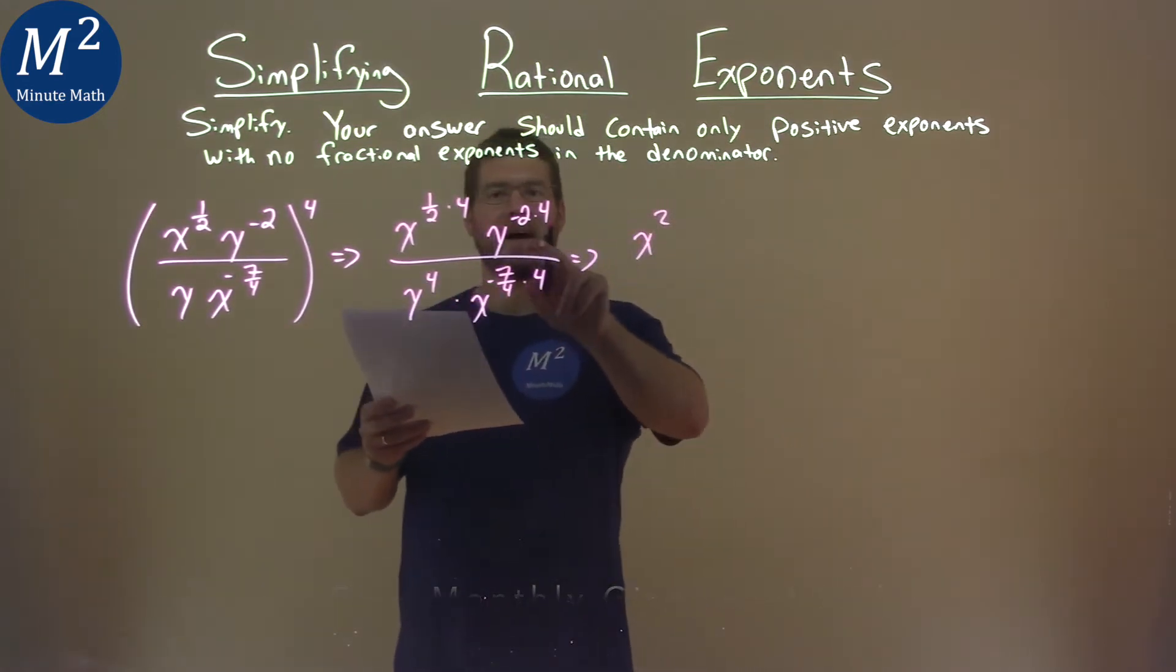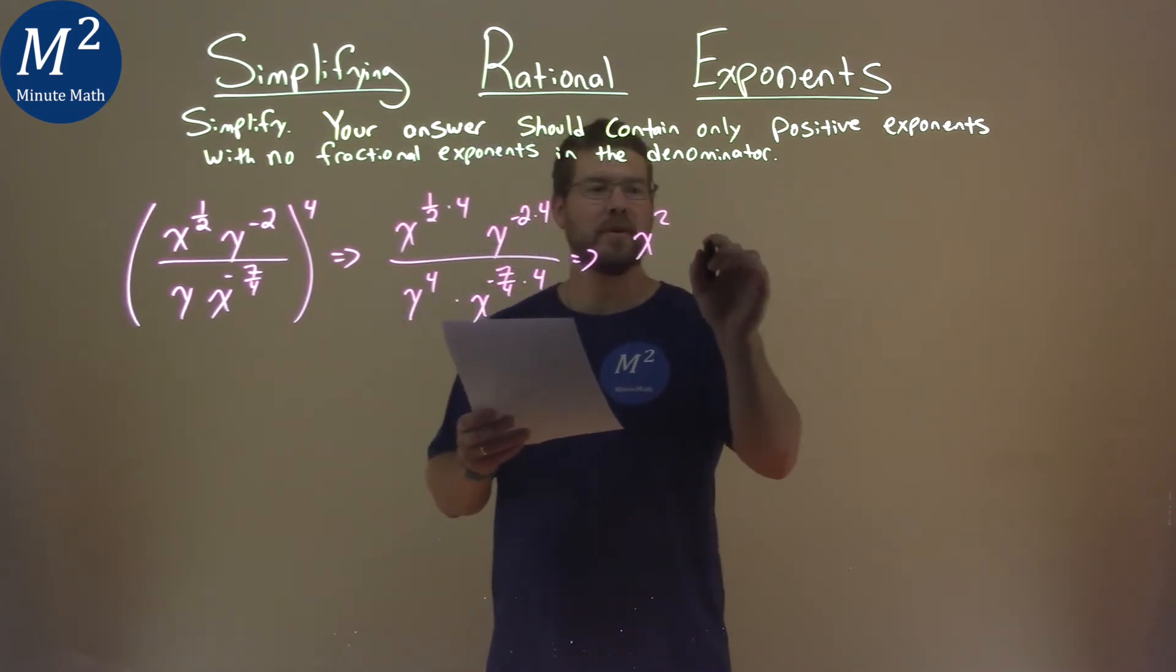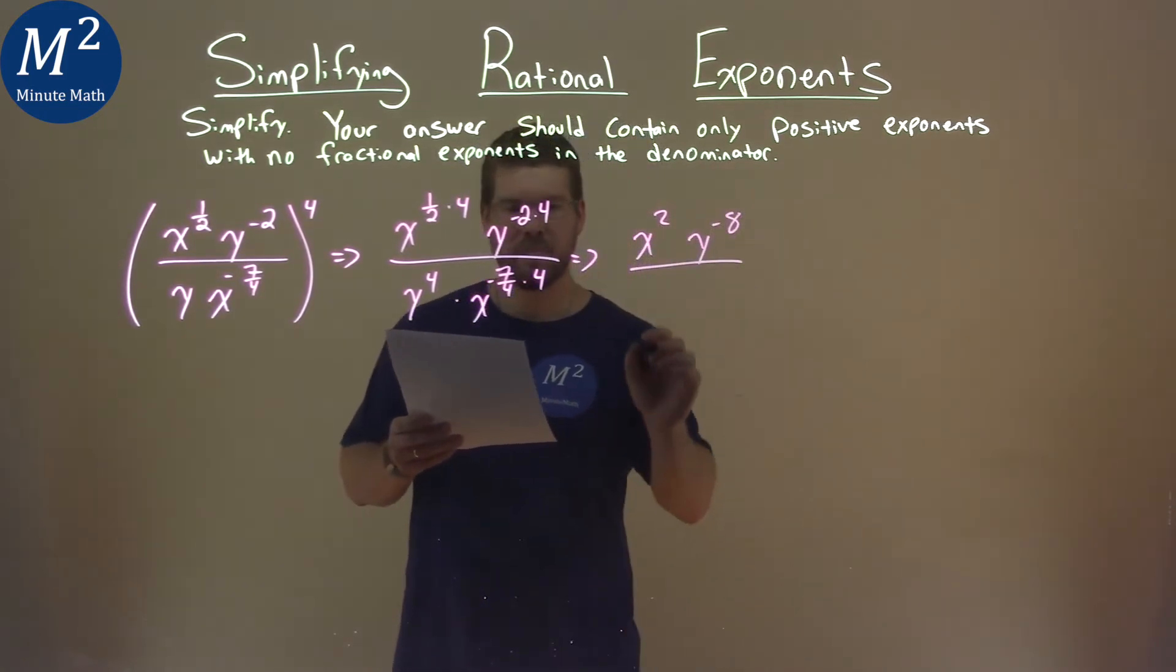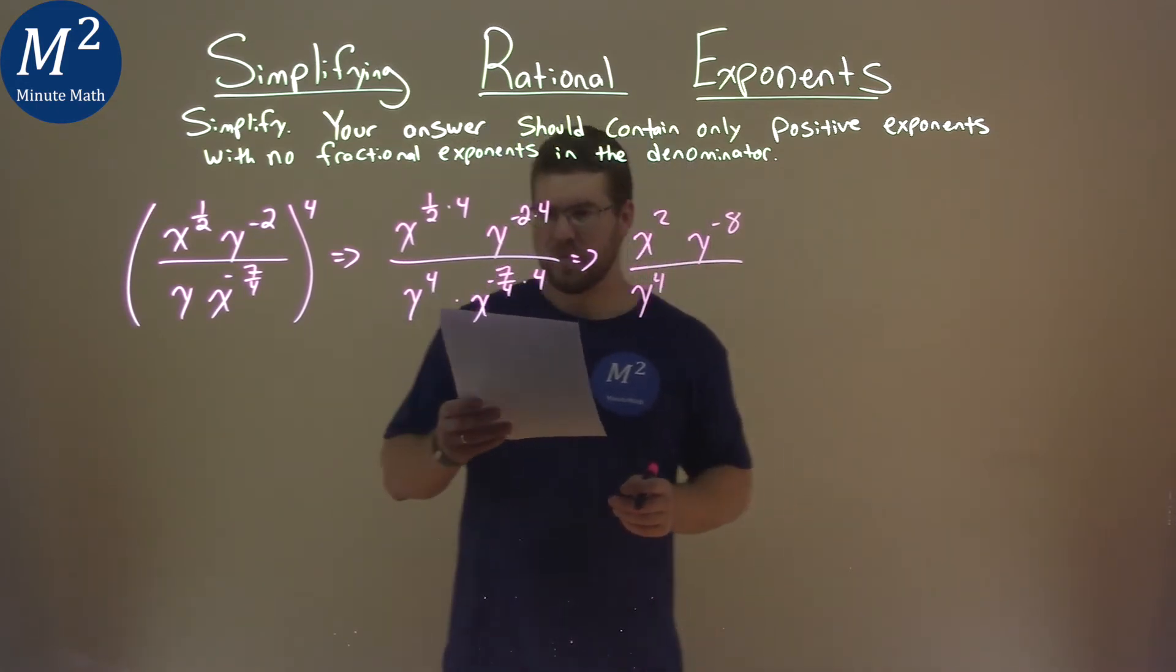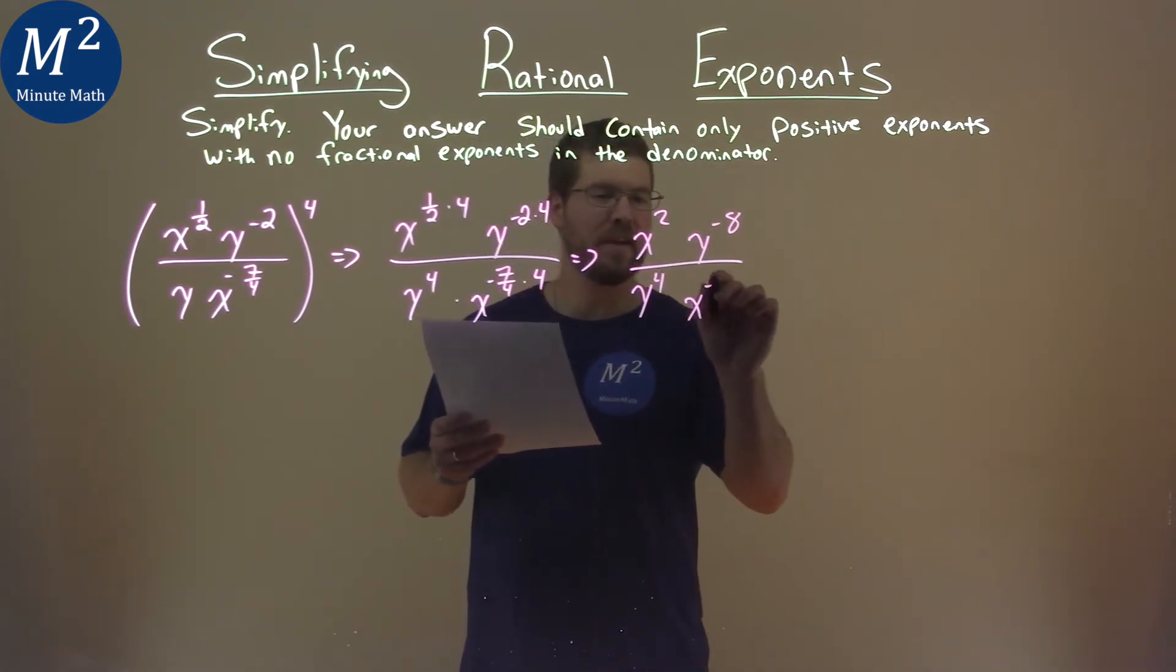y to the negative 2 times 4 is y to the negative 8, over y to the 4th stays there. And then, negative 7 fourths times 4 is just x to the negative 7.